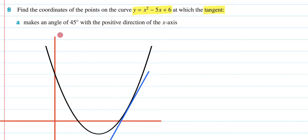Now, what needs to happen is the tangent has to be at a specific point that makes it make an angle of 45° with the x-axis. So, what that means is that this angle right here has to be 45°.